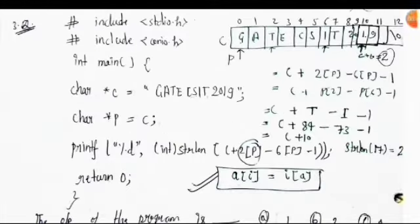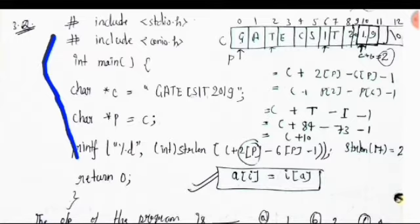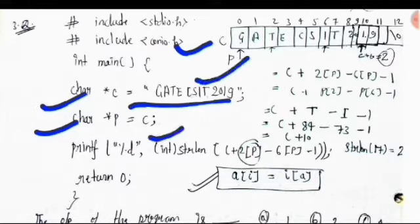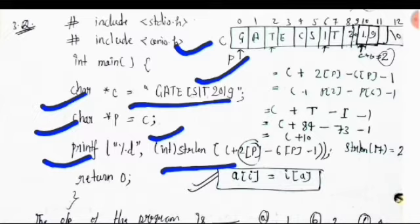Now the third question. A line of code is given and we need to find the output of the program. The four options are: A is 1, B is 2, C is 4, and D is 6. In the solution, c is pointing to a string which we can define as an array structure. Character pointer p is pointing to c, so p is pointing to the c array string. We then print the value of strlen(c) plus 2[p] minus 6[p] minus 1.